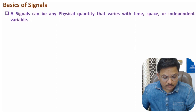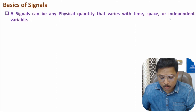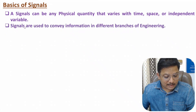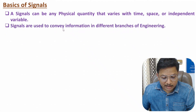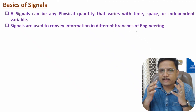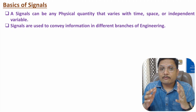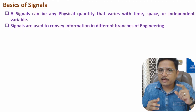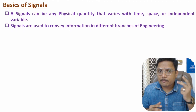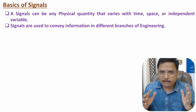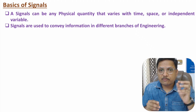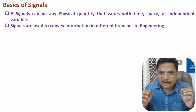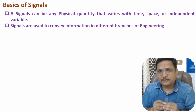So, a signal is a physical quantity that is varying with respect to time, space, or an independent variable. Signals are used to convey information in different branches of engineering. That information could be temperature, pressure, voltage, or current. In different branches of engineering, to represent a physical quantity with respect to time or with respect to an independent variable, we use signals.